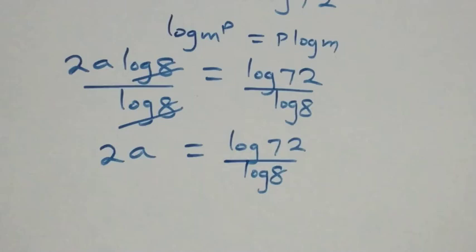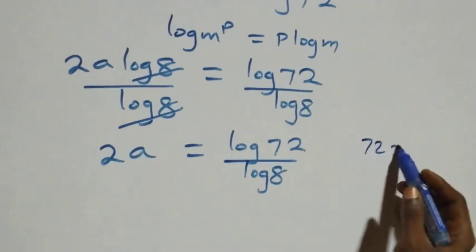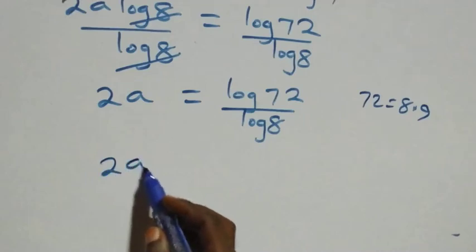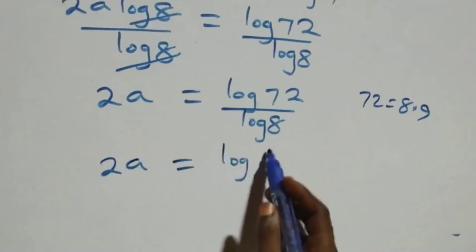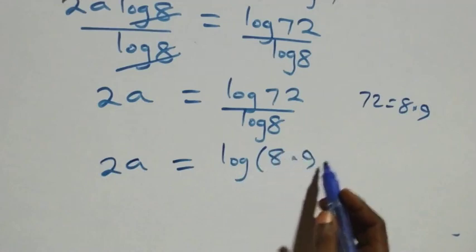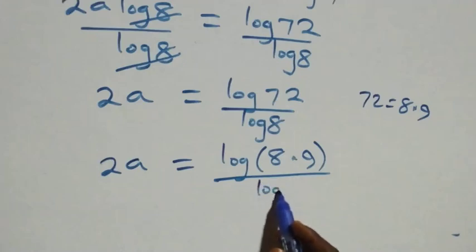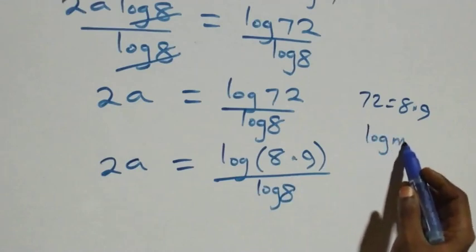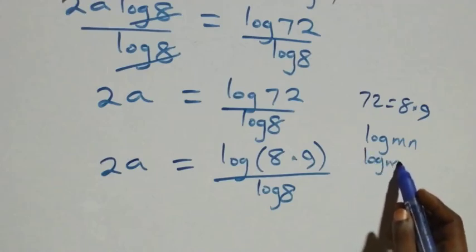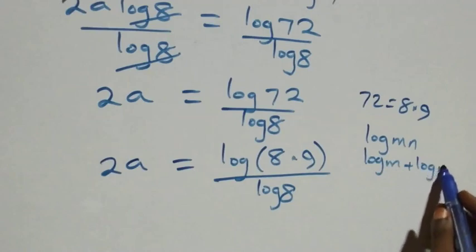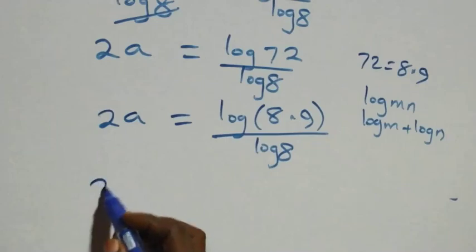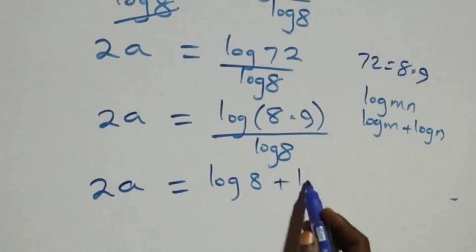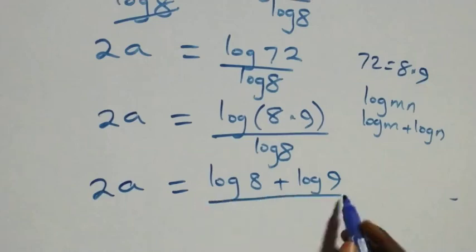In the next step we can separate 72 as 8 times 9, so what we have becomes 2a equals log(8 times 9) over log 8. Then using the law of logarithms, when we have log(m times n) we can write it as log m plus log n. So what we have now becomes 2a equals (log 8 plus log 9) over log 8.